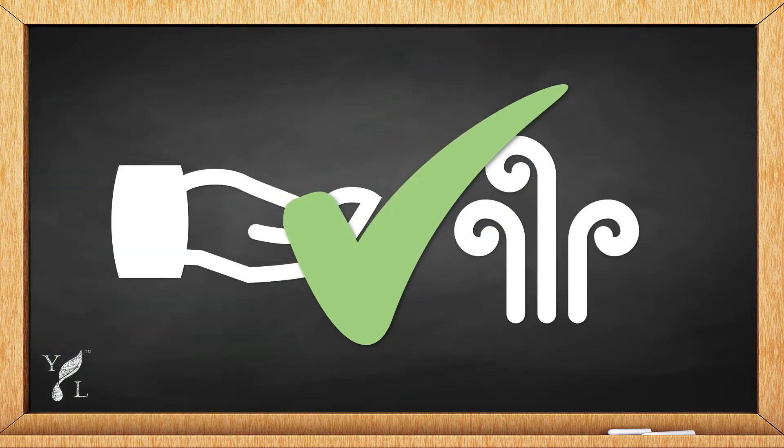We at Young Living are committed to using the best possible extraction method for each essential oil that we offer. Our proprietary seed-to-seal process is designed to preserve as much of the botanical's precious chemical profile as possible.